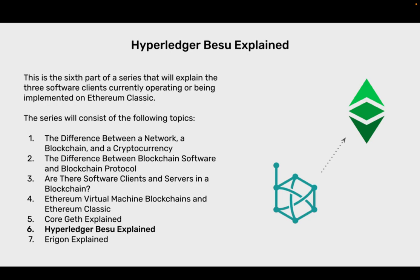The series will consist of the following topics: one, the difference between a network, a blockchain and a cryptocurrency; two, the difference between blockchain software and blockchain protocol; three, are there software clients and servers in a blockchain; four, Ethereum virtual machine blockchains and Ethereum Classic; five, CoreGeth explained; six, Hyperledger Bezu explained, which is this video; seven, Eragon explained.